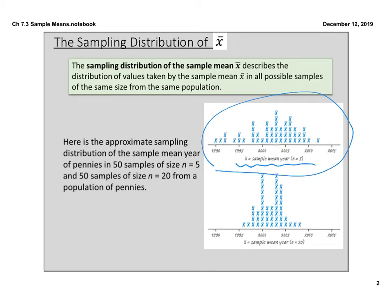When you have a smaller sample size, your variability is wider — your means are more spread out, giving a low curve with dips. When your sample size gets bigger, say from 5 up to 20, your means are a lot closer together and you almost approach a more normal-looking distribution.